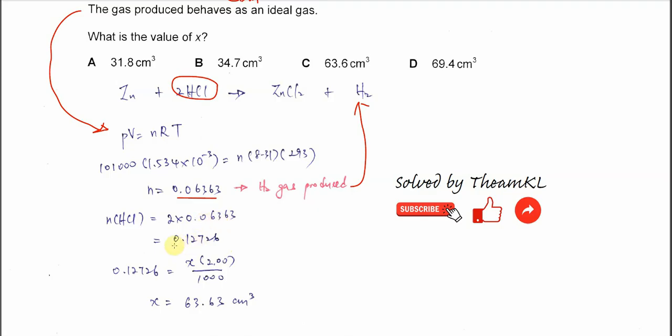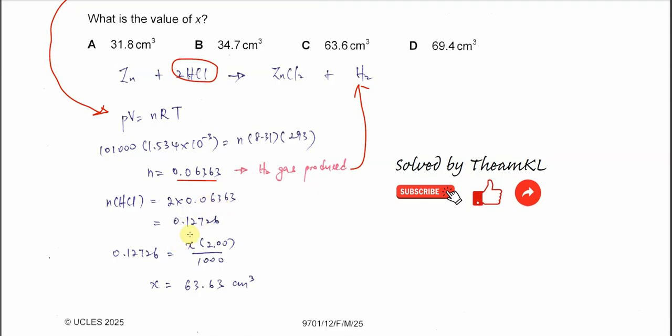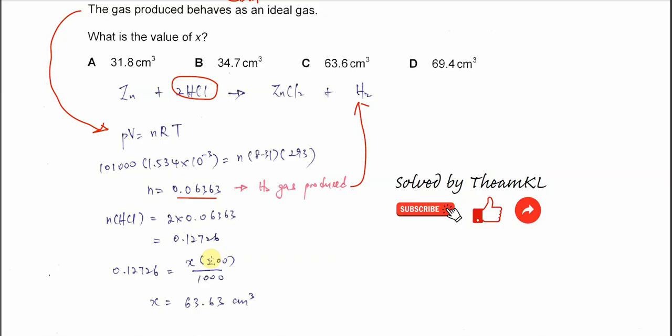Once we get the moles of HCl, then we can use the MV over 1000 because n equal to the M, M is concentration, times volume over 1000.